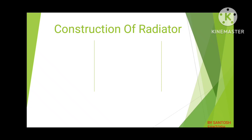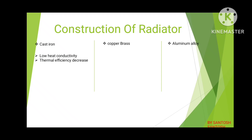Now let's see the construction of the radiator. Radiators are made from three main materials: cast iron, copper brass, and aluminum alloy. In the case of cast iron, it has low heat conductivity. Because of low heat conductivity, the thermal efficiency of the engine decreases, and the output of the engine also decreases. Additionally, a cast iron radiator increases the overall weight of the vehicle.